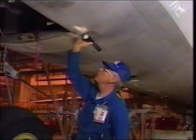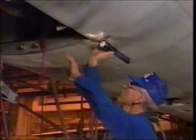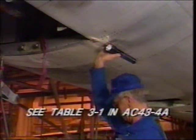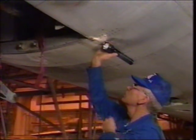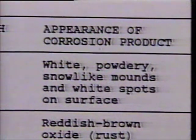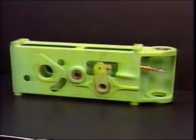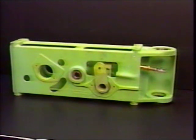Other metals commonly used in aircraft construction require special preventive measures to protect them from corrosion. The information which follows summarizes Table 3-1 of your AC-43-4A. Magnesium is the most chemically active metal used in aircraft construction and is highly susceptible to pitting. Corrosion on magnesium initially appears as white spots on the metal, and with time these spots can develop into white powdery mounds of corrosion product. Magnesium always requires a protective coating, and is usually painted and protected by either chemical conversion or electrolytic processes.